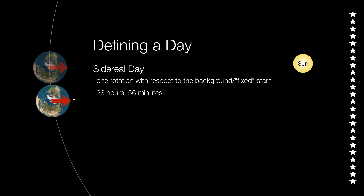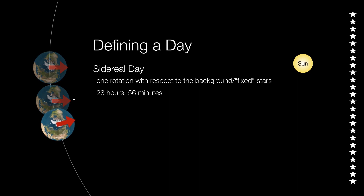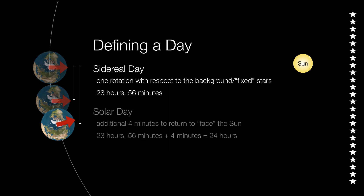But we're not pointed at the Sun yet. We have to rotate a little bit more, and in so doing we move just a little bit farther along in our orbit. This causes the solar day to happen — in other words, we need an additional four minutes to face the Sun. And this is why the Sun appears to shift its position with respect to the background stars.